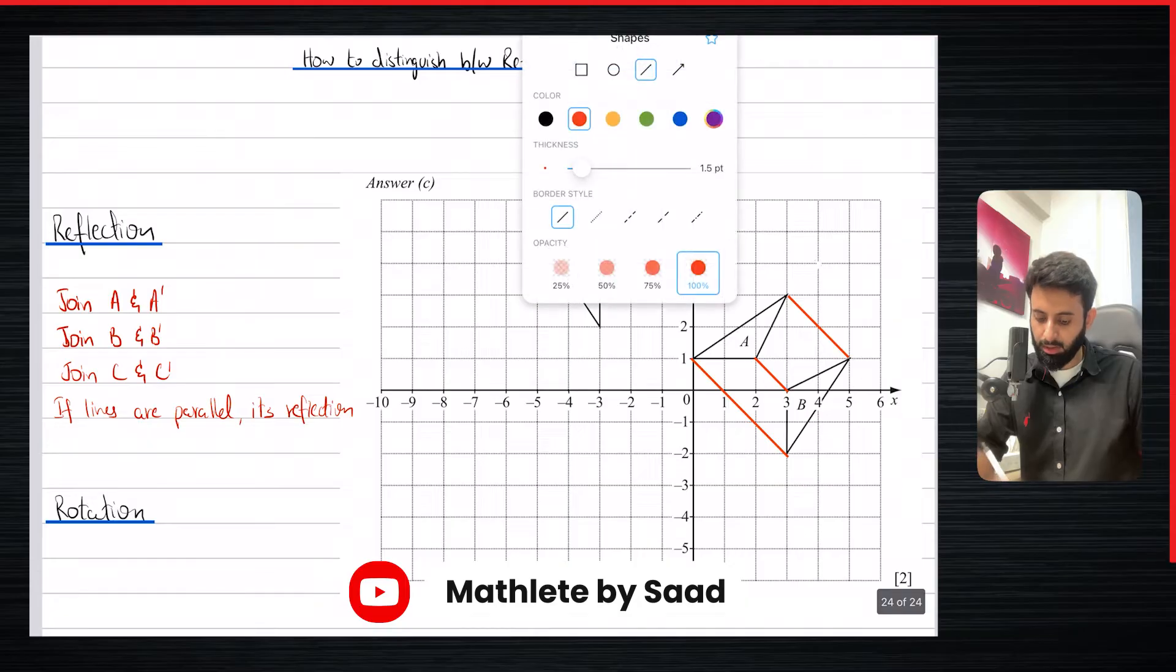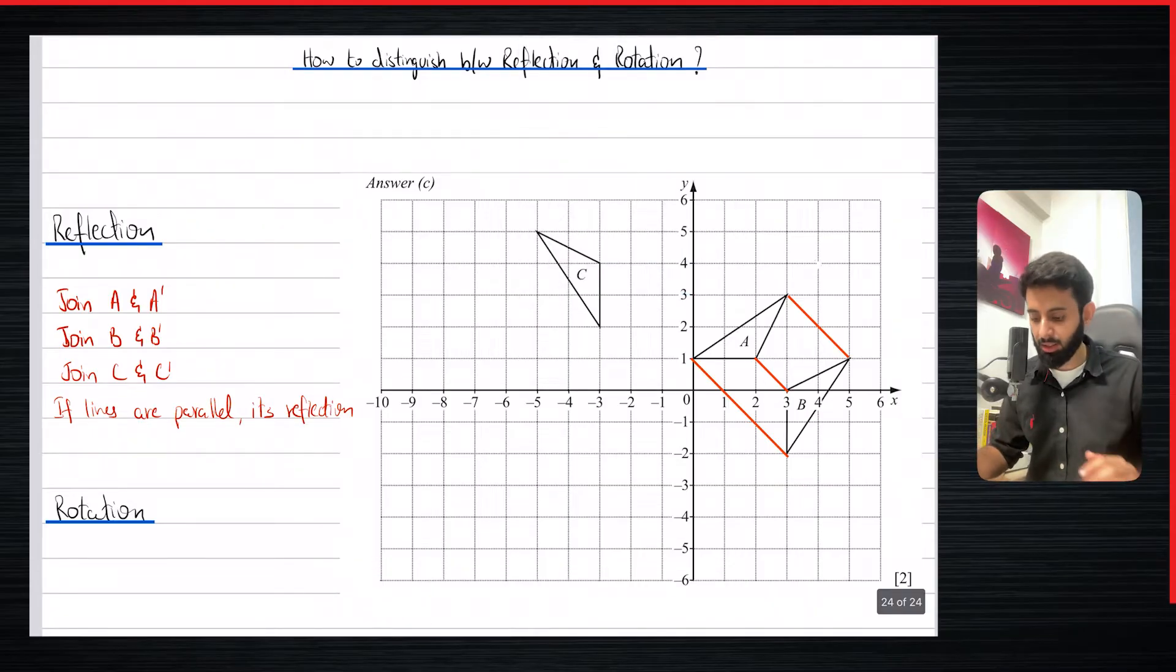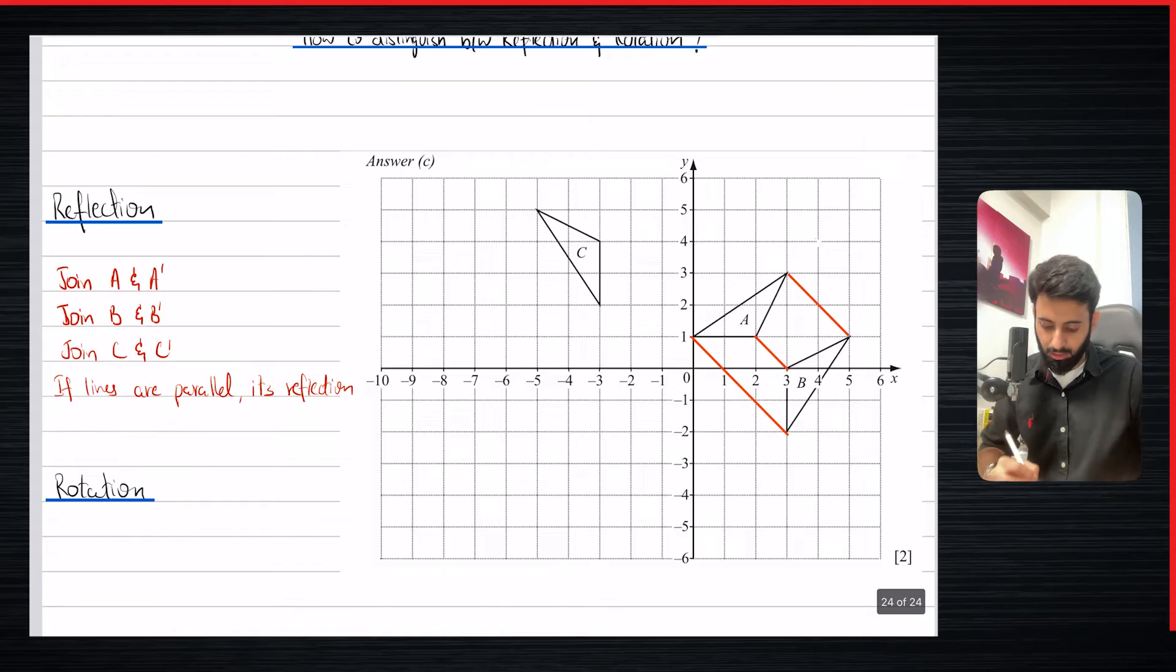Now what does that mean? That means when we join the points, lines happen to be parallel, that means it's a reflection. Now what happens in the case of rotation? Let's see.